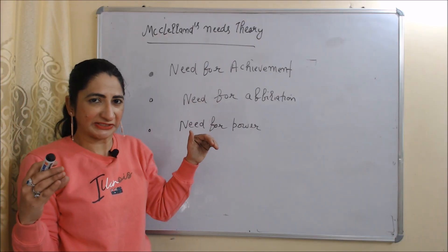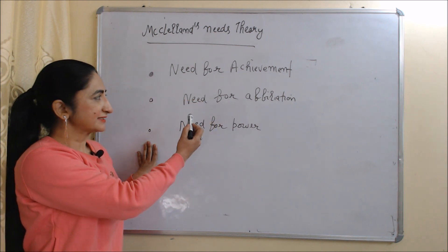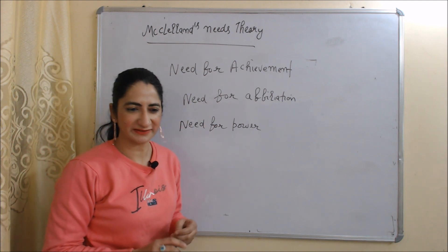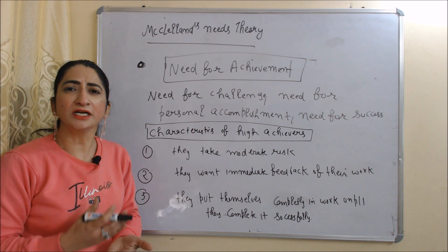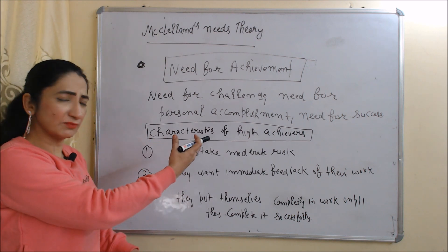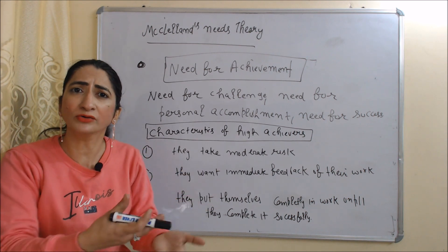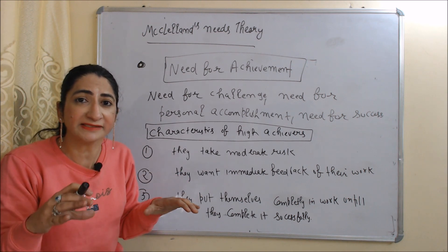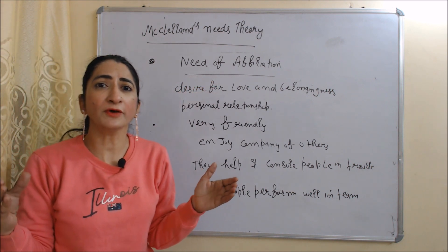Now we will see McClelland's Needs Theory, which talks about three types of needs: need for achievement, need for affiliation, and need for power. Need for achievement is the need for challenge, personal growth, and success. People with a high need for achievement take moderate risks, want immediate feedback on their work, and put themselves completely into work until they complete it successfully.